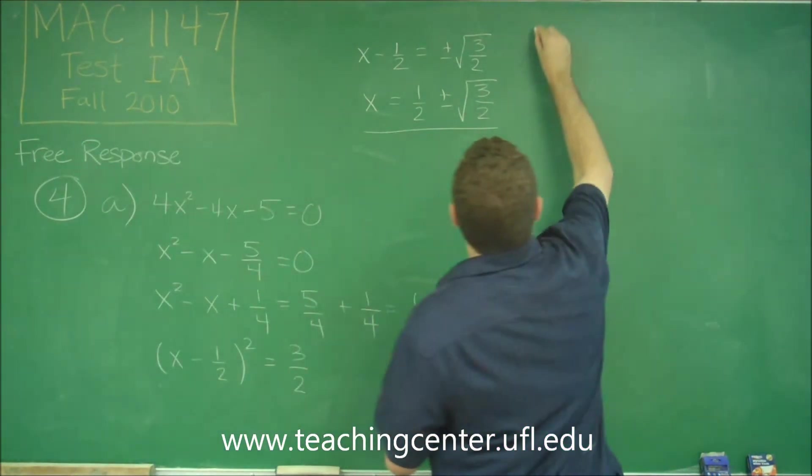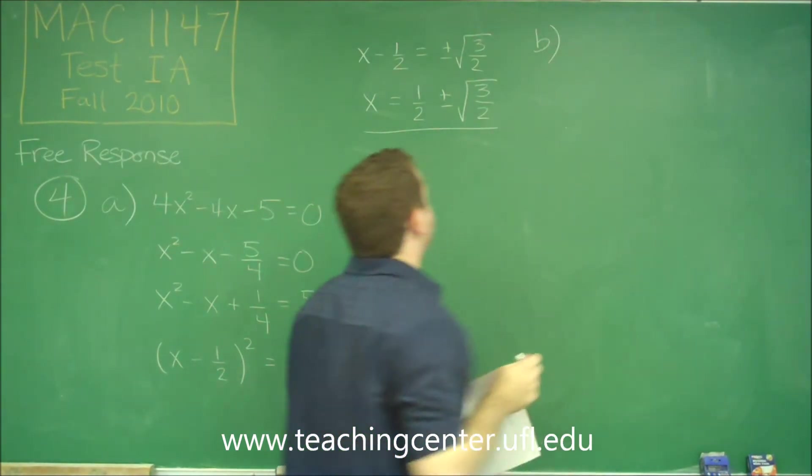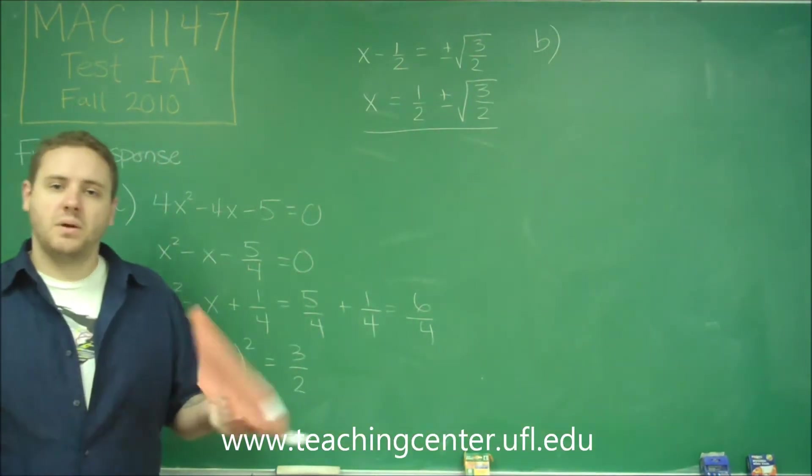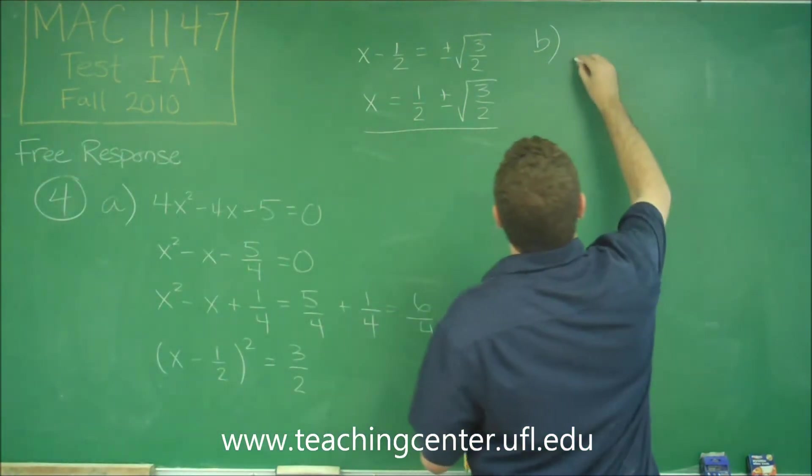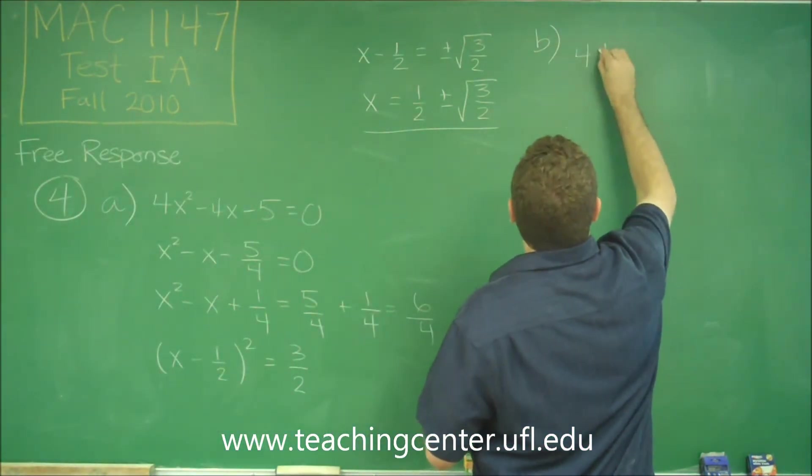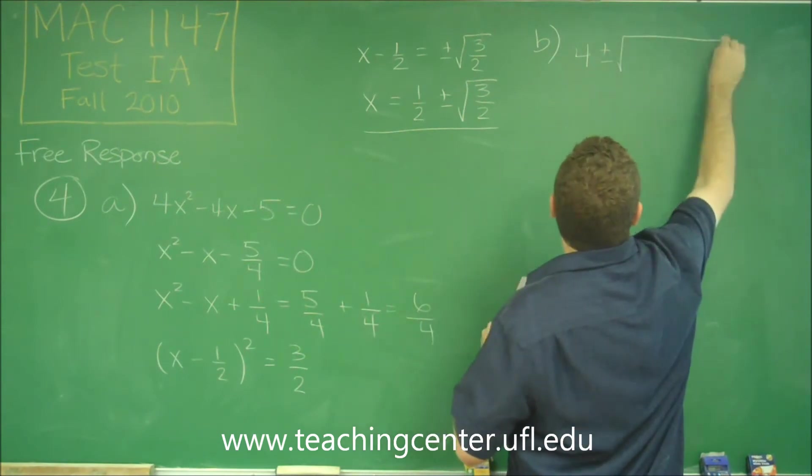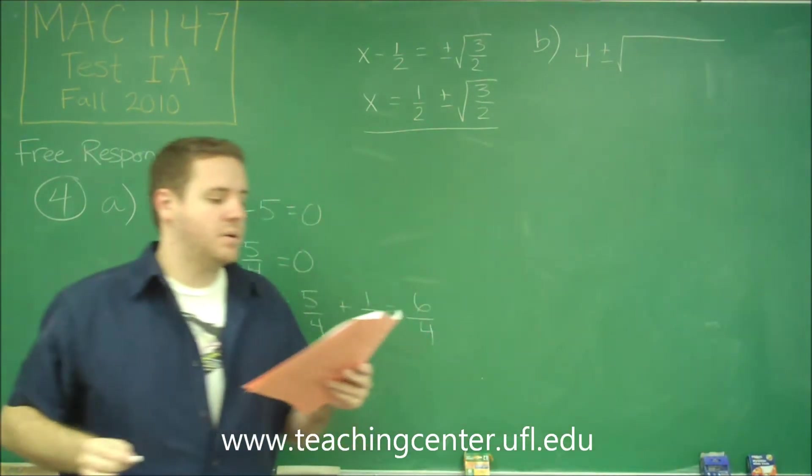Now using the quadratic formula, as long as you remember it, it's probably going to be a little bit simpler. So remember that we have the opposite of b, 4, plus or minus the square root of b² - 4ac.